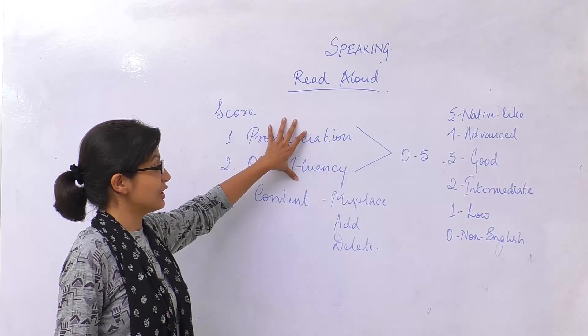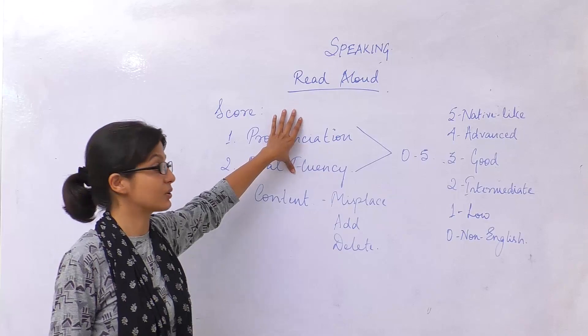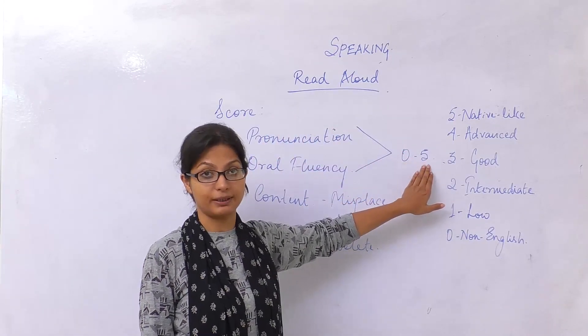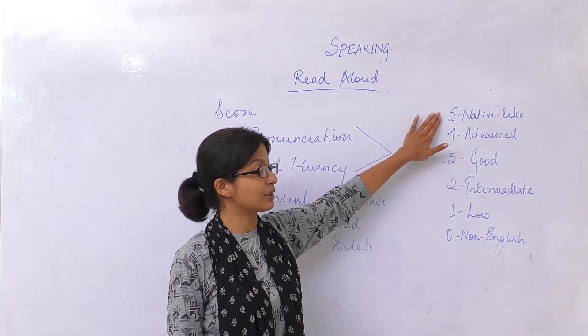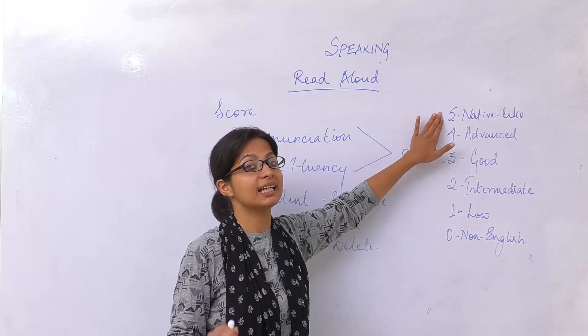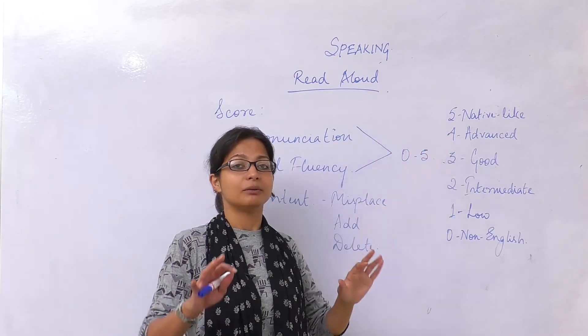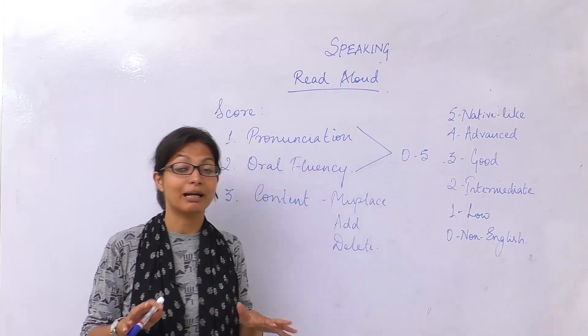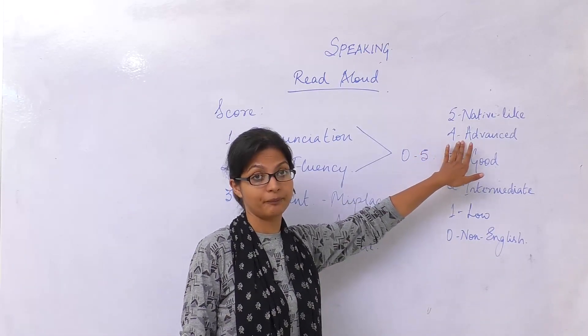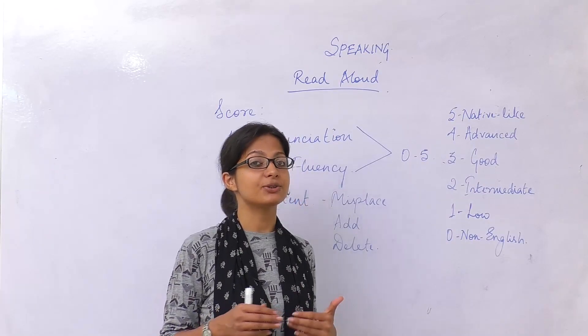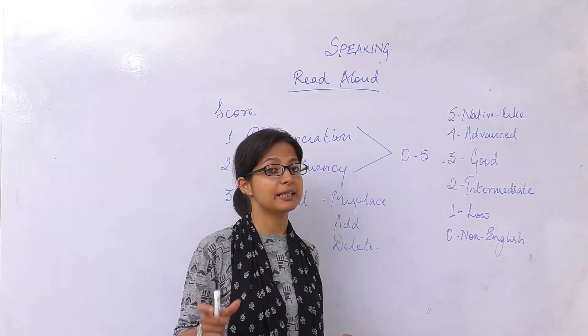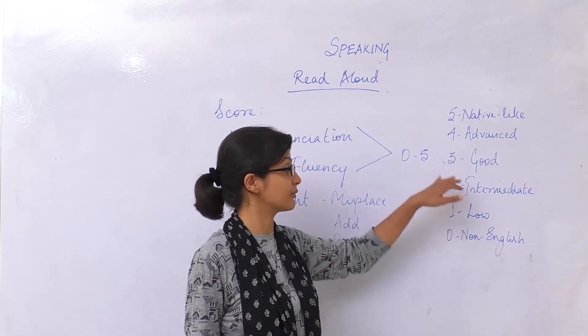Now pronunciation and oral fluency are scored in terms of 0 to 5. If you have a pronunciation that is almost like a native person, you get a 5. If you are understood okay-ish by the native person, you get a 4. If the native person needs to guess some of the words that you are speaking but can understand the context, you get a 3.